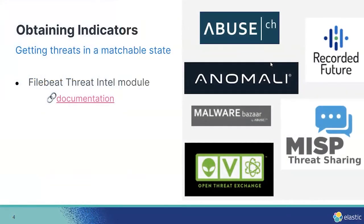For obtaining indicators, we offer a Filebeat Threat Intel module that makes it easier to consume indicators from the following sources: Anomaly, MalwareBazaar, MISP, MISP, Recorded Future, and AlienVault. All of these sources are available for establishing Threat Intel pipelines with the Filebeat module. Additionally, we are very close to offering a package integration with Fleet so that it would be just one click to integrate these sources.